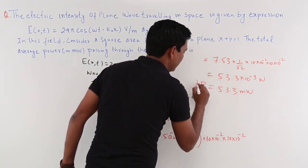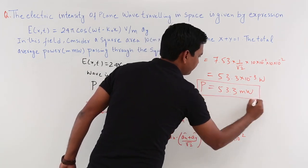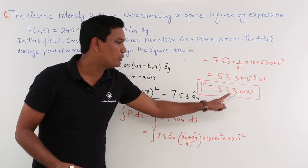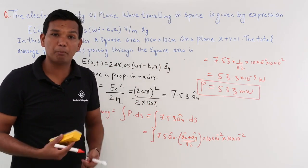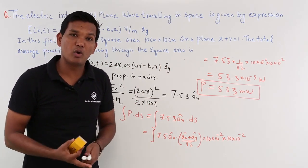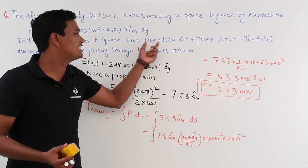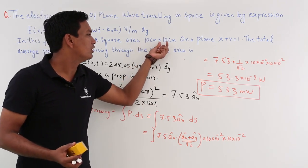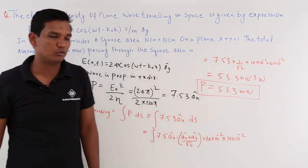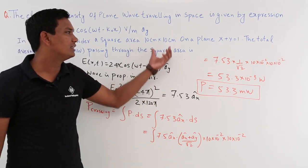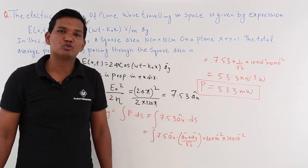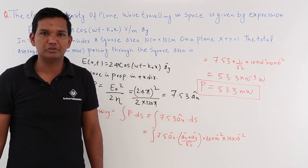So 53.3 milliwatts of power will be crossing a square area of 10 centimeter × 10 centimeter. We have concluded what would be the power crossing that square area. We will see how to solve more problems like this in the next videos.